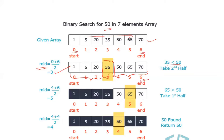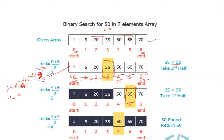We update the lower limit to mid + 1, which is 4, and keep the upper limit at 6. The new mid is (4 + 6) / 2 = 5. The element at index 5 is 65. Since 65 is greater than 50, we discard the right half and update the upper limit to mid - 1 = 4.